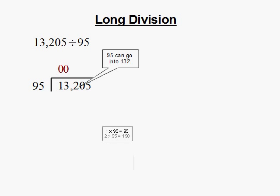95 can go into 132. We want to find the biggest number that can go into 132 without going over. In this case, it would be 1 times. We take 1, multiply that by 95, and then we take that and subtract that from 132, which gets us 37.